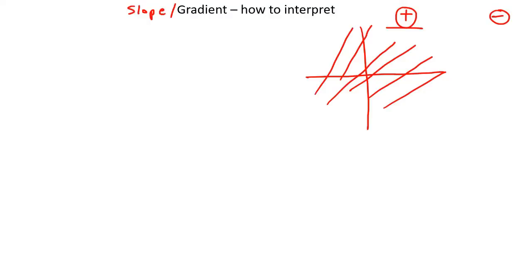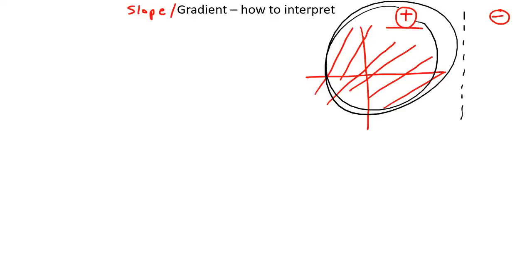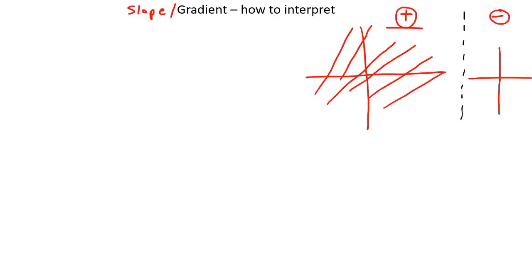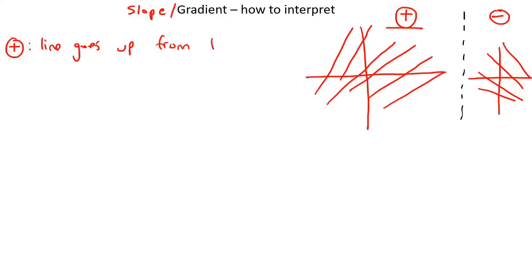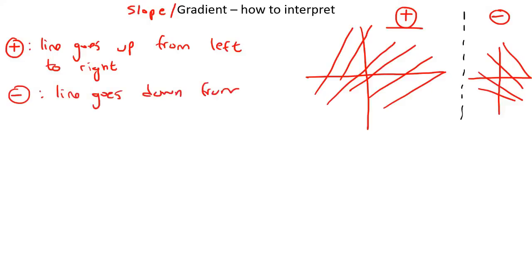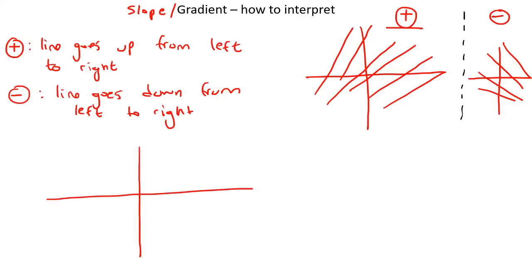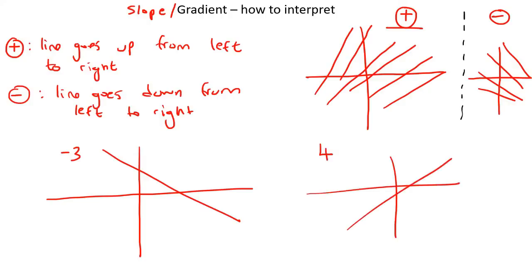This is just to compare positive gradients versus negative gradients. If you have a negative gradient, then your slope goes down from left to right. So if your gradient is positive, the line goes up from left to right. If your gradient is negative, the line goes down from left to right. For example, if I have a gradient of negative 3, it goes down; if I have a gradient of positive 4, it goes up.